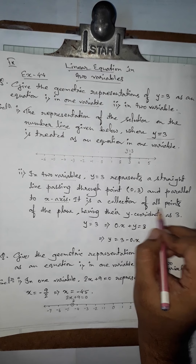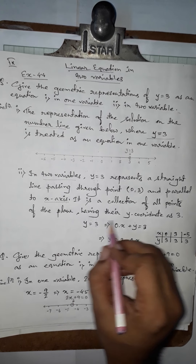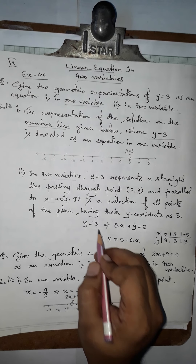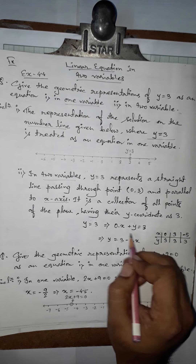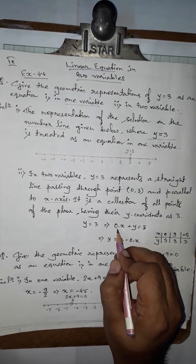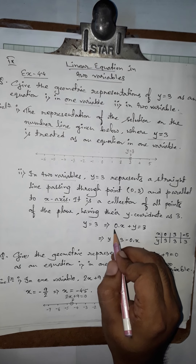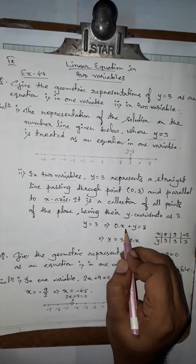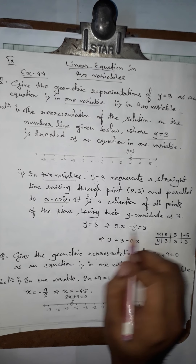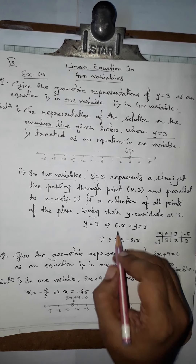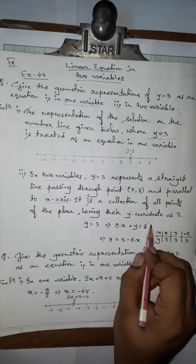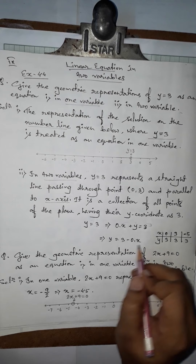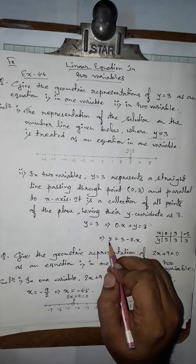So y equals 3 is a collection of all points in the plane having y-coordinate as 3. We can write it as a two-variable equation by giving the coefficient of x as 0: 0·x + y = 3. So y equals 3 minus 0·x. Now putting some values of x, we will get the value of y.